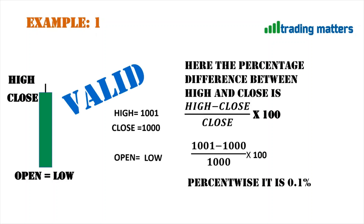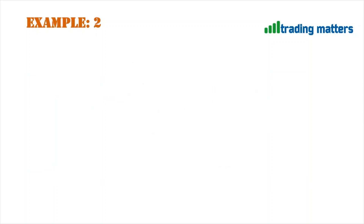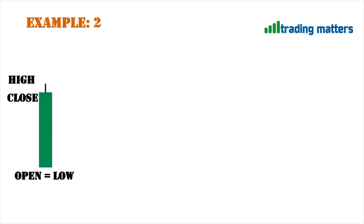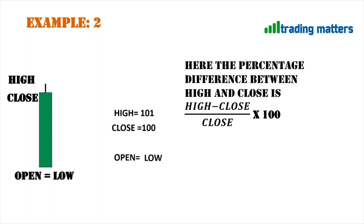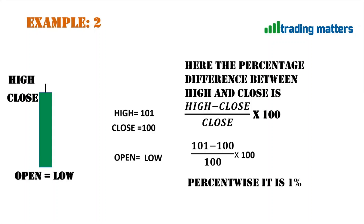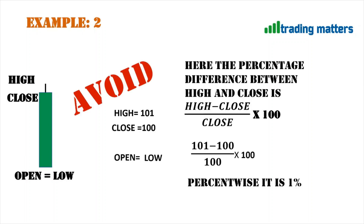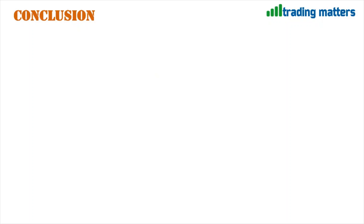In example two, a candle has a difference between high and close where high is 101 and close is 100, with open equal to low. Applying the same formula gives 1%, which is much greater than the allowed 0.2%. Therefore this candlestick is not considered a Marubozu and we will avoid trading it.